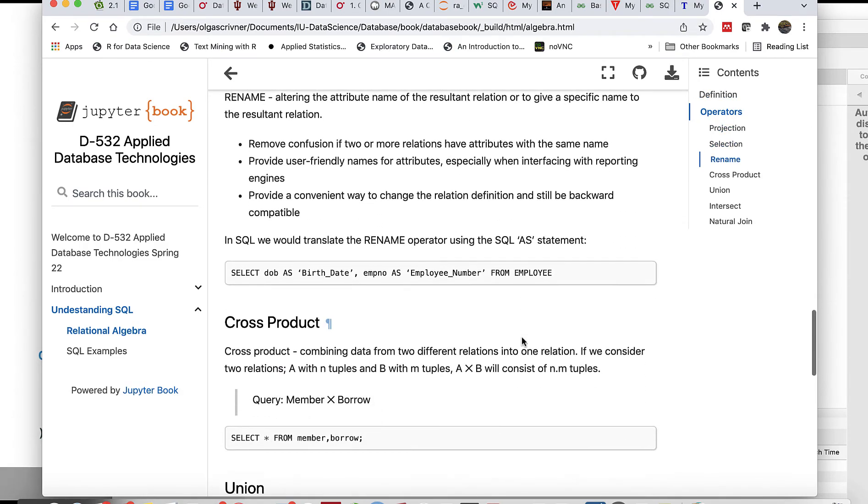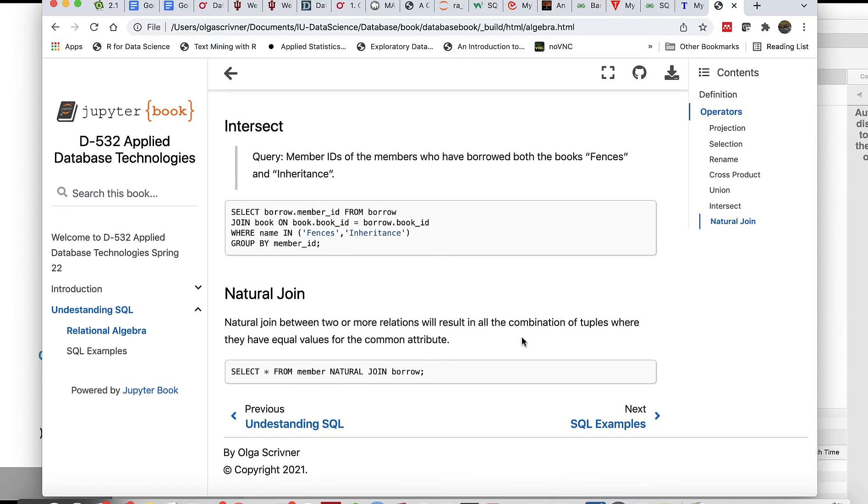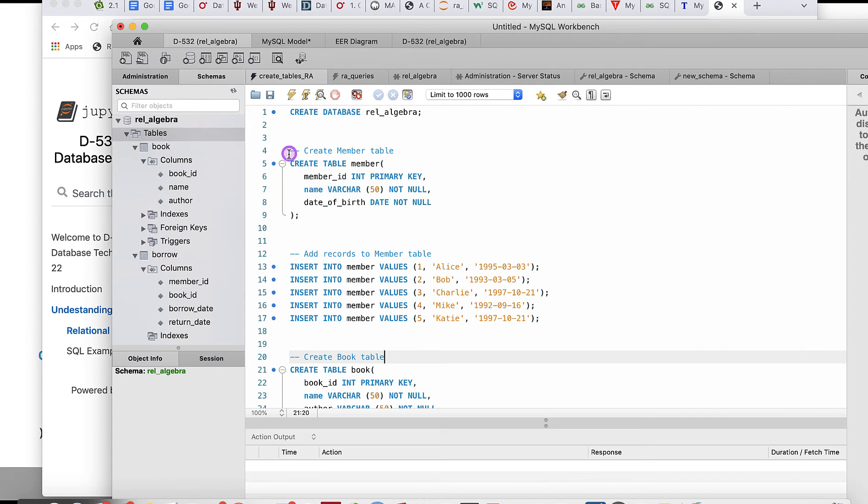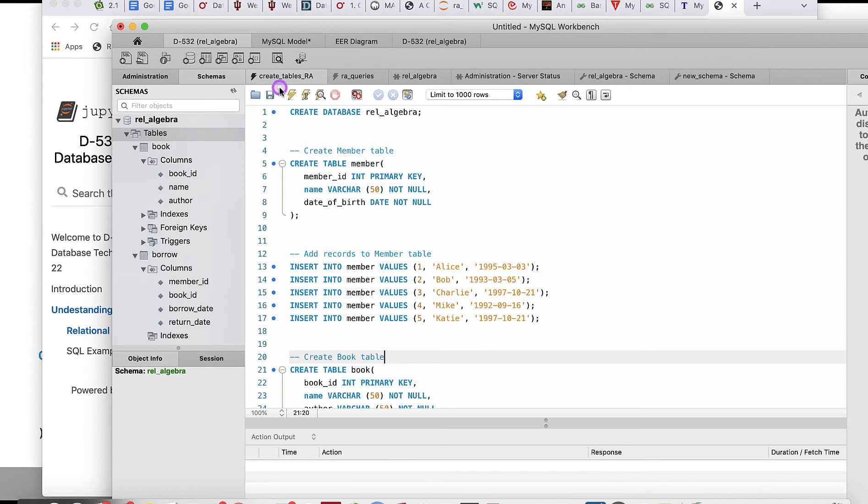But first, let's create a database that we can work with. Remember to start your MAMP server, and next you'll need to create a database. To do that, we can click on the plus sign to create a new connection. For example, I created a new connection for this semester, D-532. When you create your connection, create a new query, and the first thing you need to do is create the database.